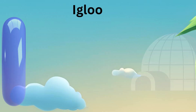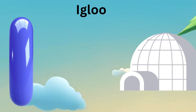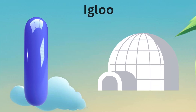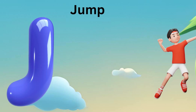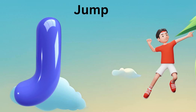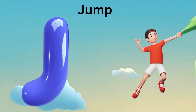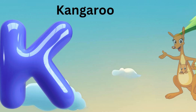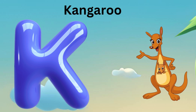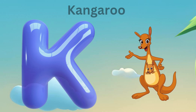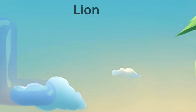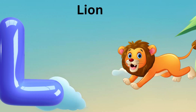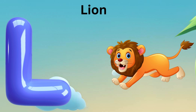I is for Igloo, I-I-Igloo. J is for Jump, J-J-Jump. K is for Kite, K-K-Kite. L is for Lion, L-L-Lion.